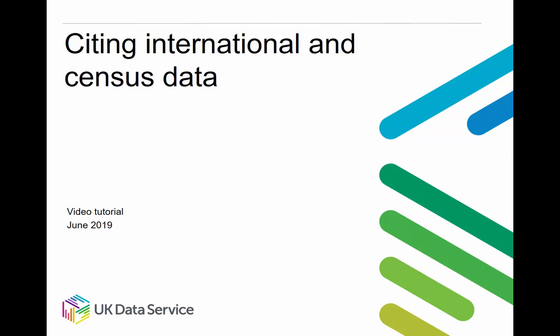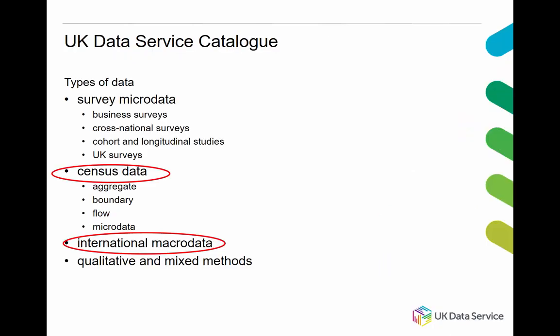Welcome to this UK Data Service guide on citing international and census data. This guide shows you how to cite international macro data and census data obtained from the UK Data Service. The UK Data Service has a searchable data catalogue which enables access to data suitable for research and teaching purposes. The range of types of data available from the catalogue include survey micro data, census data, international macro data, and qualitative and mixed methods data. This video will explain how to cite international and census data.